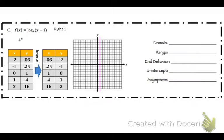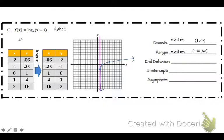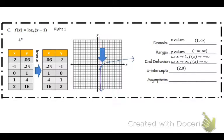I graph those points off of the new axis: (0.06, −2), (0.25, −1), (1, 0), (4, 1) — 16 would be off the graph. Domain: from left to right, the smallest x value is 1, so that's 1 to infinity. Range: negative infinity to positive infinity. End behavior: as x goes to 1, f of x goes to negative infinity; as x goes to infinity, f of x goes to infinity. The x-intercept is (2, 0). The asymptote is x equals 1.